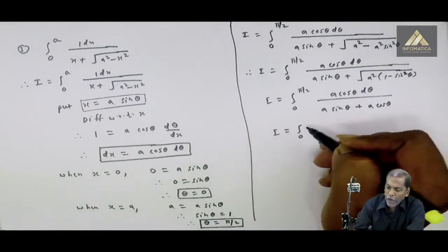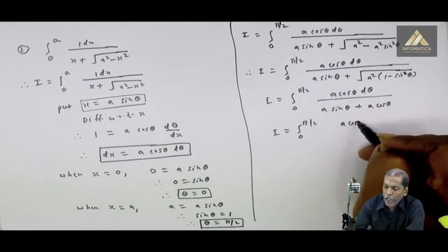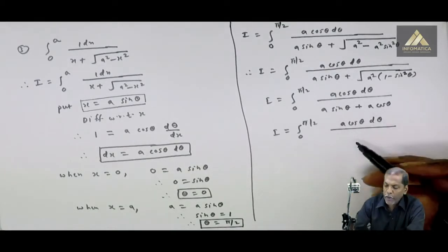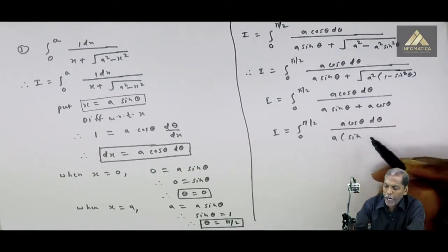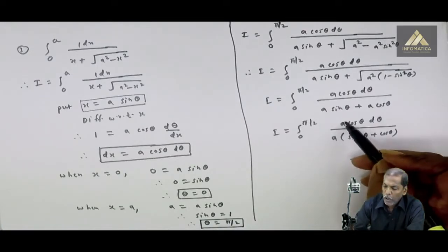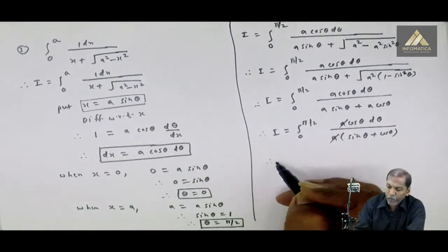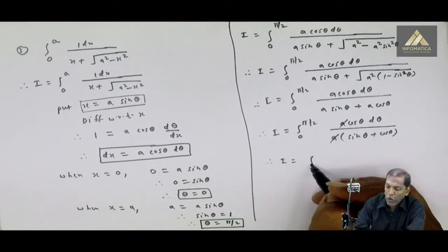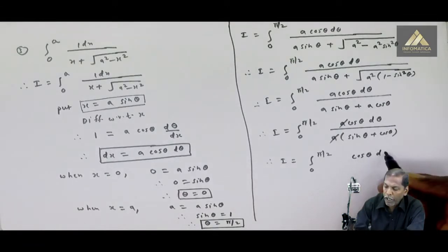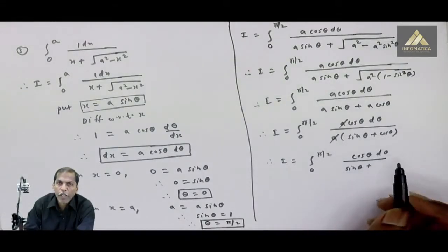Then we write I equals the integral from 0 to pi by 2 of a cos theta d theta in the numerator. In the denominator, taking a common gives a times the bracket sin theta plus cos theta. Then a cancels, so therefore I equals the integral from 0 to pi by 2 of cos theta d theta upon sin theta plus cos theta.